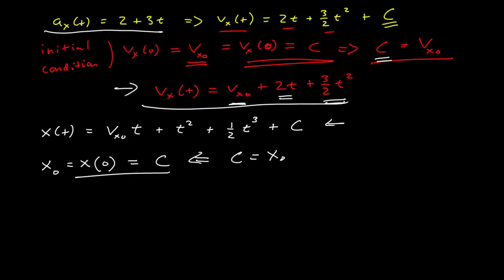That's not always true. This constant isn't necessarily always the initial velocity, or in this case, the initial position. But for these simple polynomial examples, that turns out to be true. And so now we can write the full position as a function of time, which is the initial position plus the initial velocity times t, plus t squared, plus 1 half t cubed.